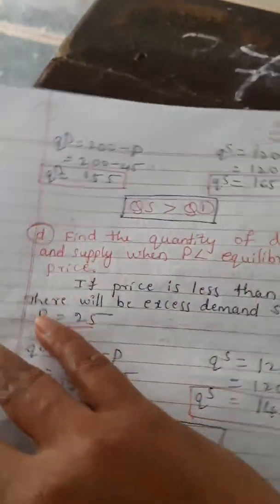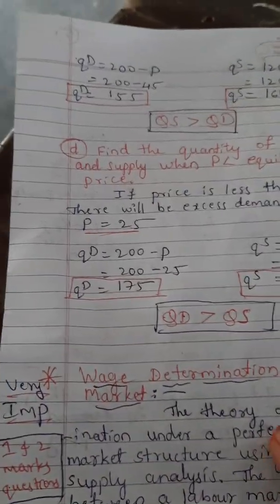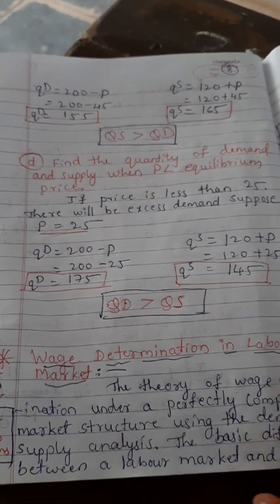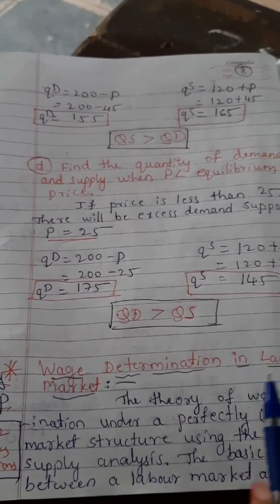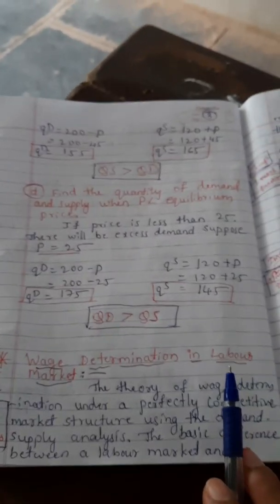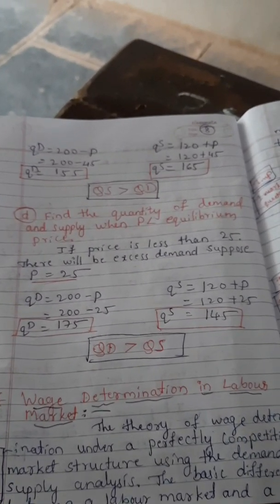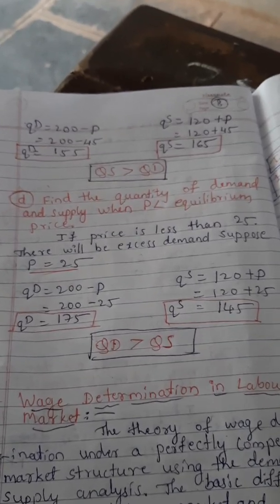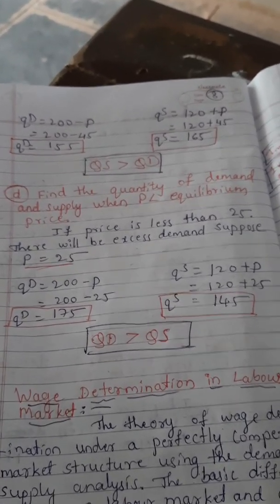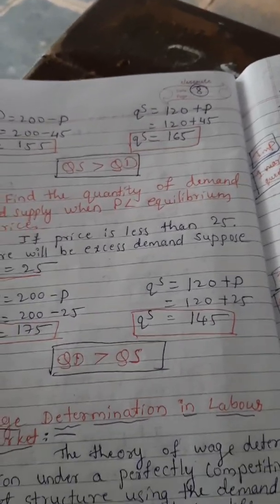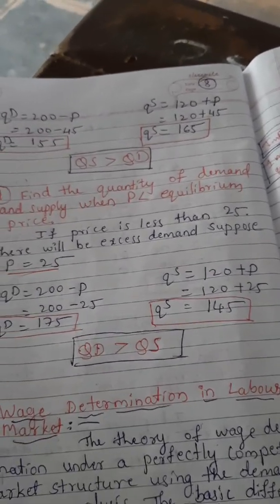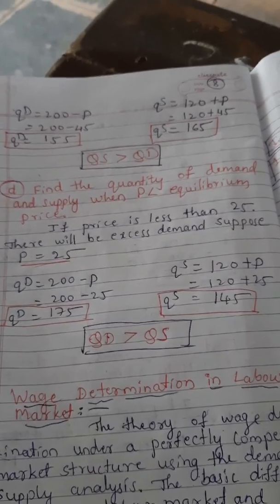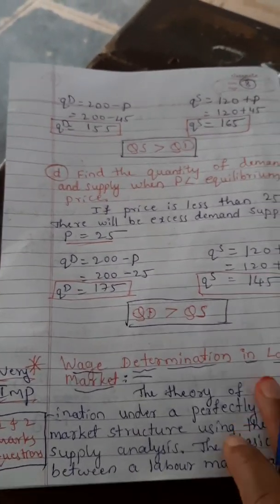As a continuation, we will now explain wage determination in a labor market and labor market equilibrium. Labor refers to workers — daily wage workers, factory workers, and so on. Physical laborers are daily wage workers, while mental laborers are professional workers such as doctors and teachers.